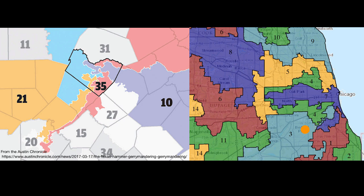Some things might immediately jump out at you. Here in Chicago, Illinois, this fourth district in particular seems kind of fishy. It's often known as the earmuff district — it has a northern part and a southern part, and it's actually connected just by an interstate, not by the things on either side of that interstate. So that doesn't seem like a natural shape for a congressional district. And here in Austin, Texas, you see that the votes in Travis County are split amongst many congressional districts.